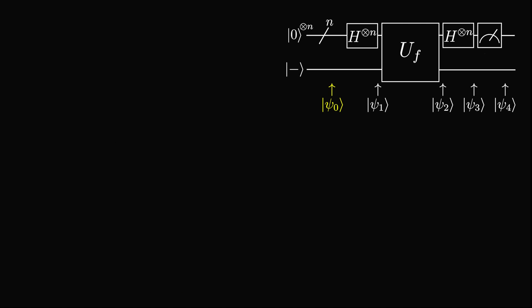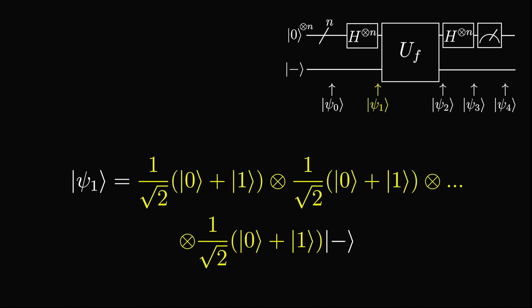Initially, the state is n zeros minus. We can rewrite the n zeros as 0 tensored with itself n times, giving us this state. Then at psi sub 1, we apply a Hadamard gate to each of the qubits in the first register. If we expand them out, then we have 1 over root 2, 0 plus 1, tensored with 1 over root 2, 0 plus 1, and so on, n times.